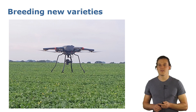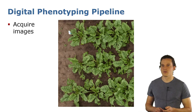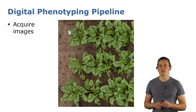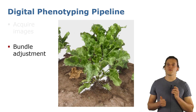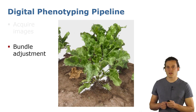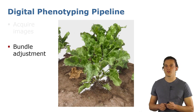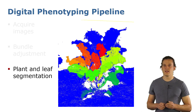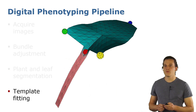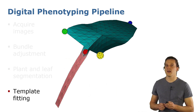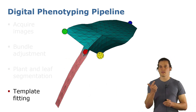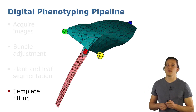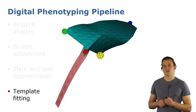By doing this, we have a much higher throughput at a fraction of the cost. To extract the plant traits, we first acquire the images with the UAV, then we perform bundle adjustment to obtain three-dimensional data in the form of point clouds. We then segment these point clouds into single plants and individual leaves, and finally we fit the template mesh on which we define key points corresponding to the tip, the base, and the left and right corners.